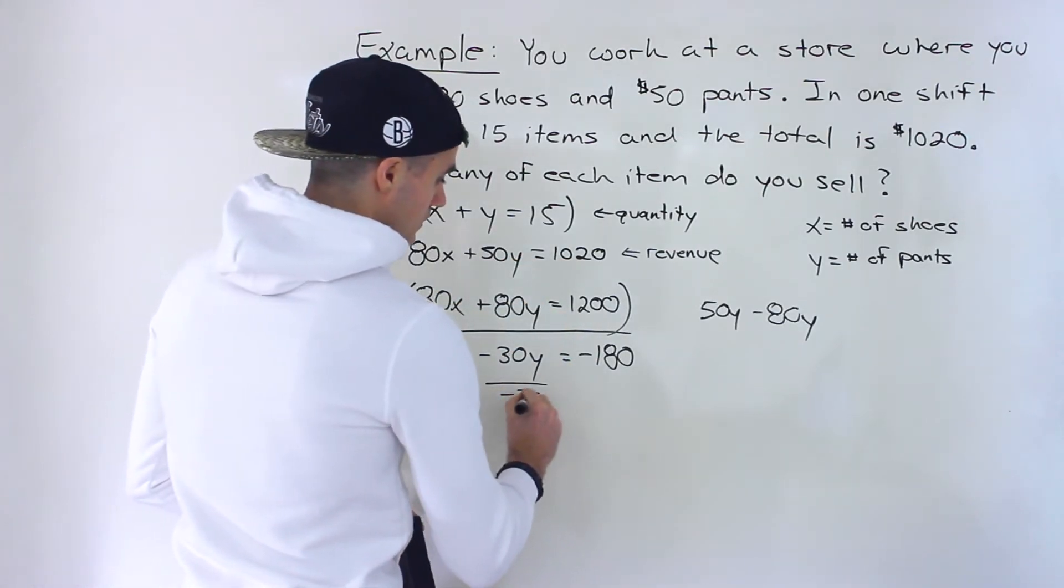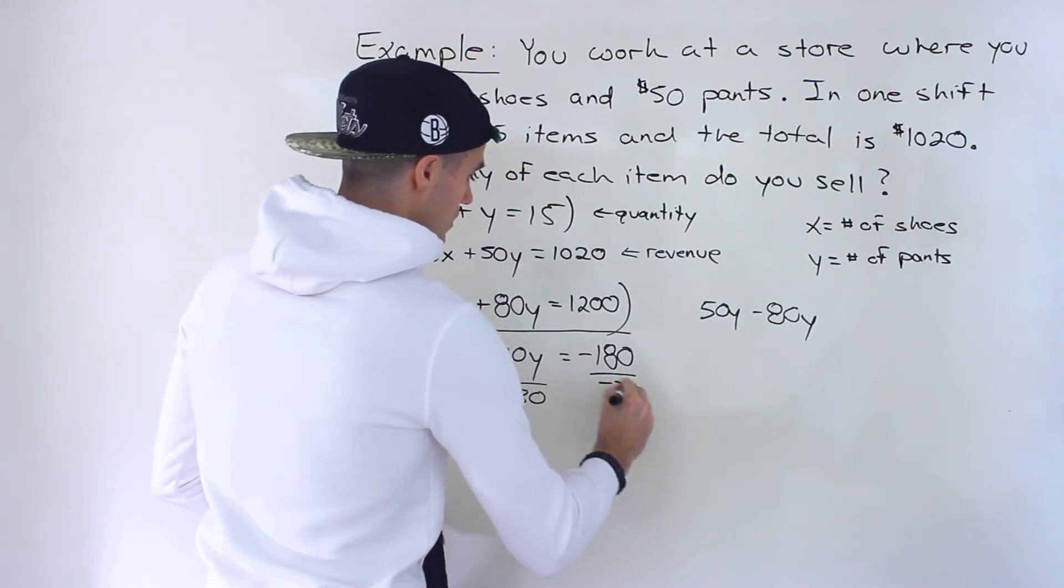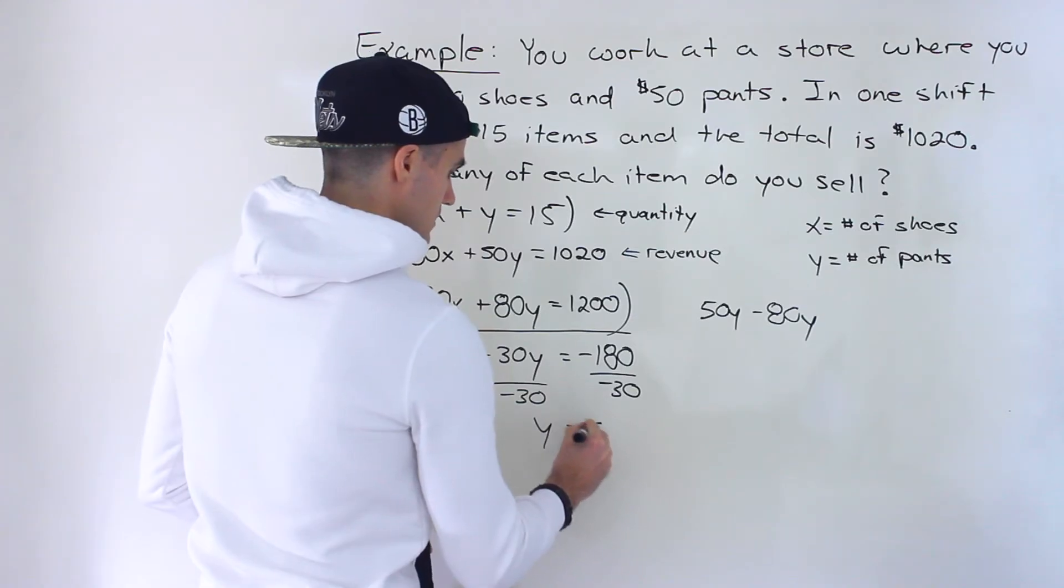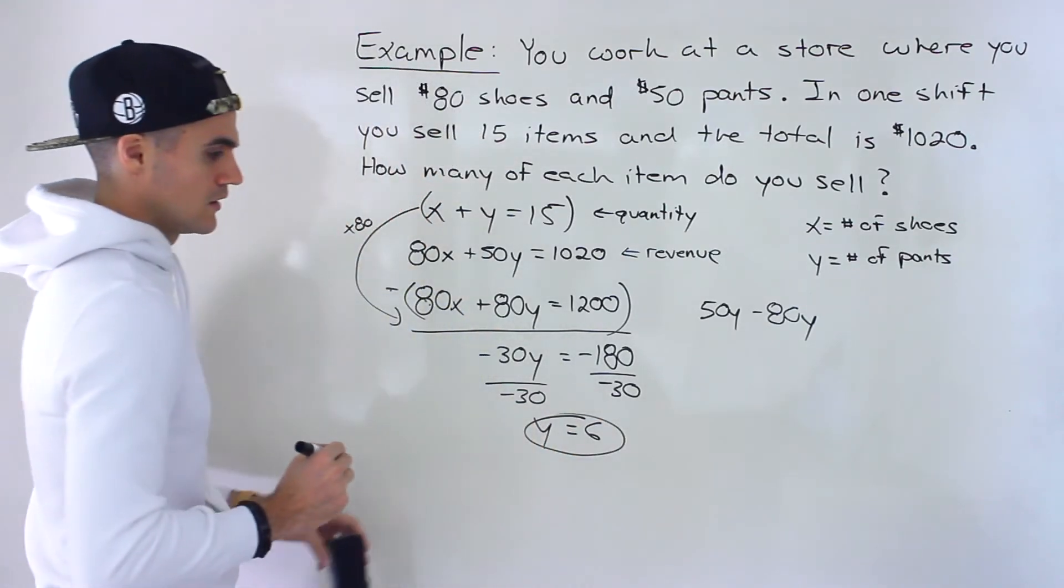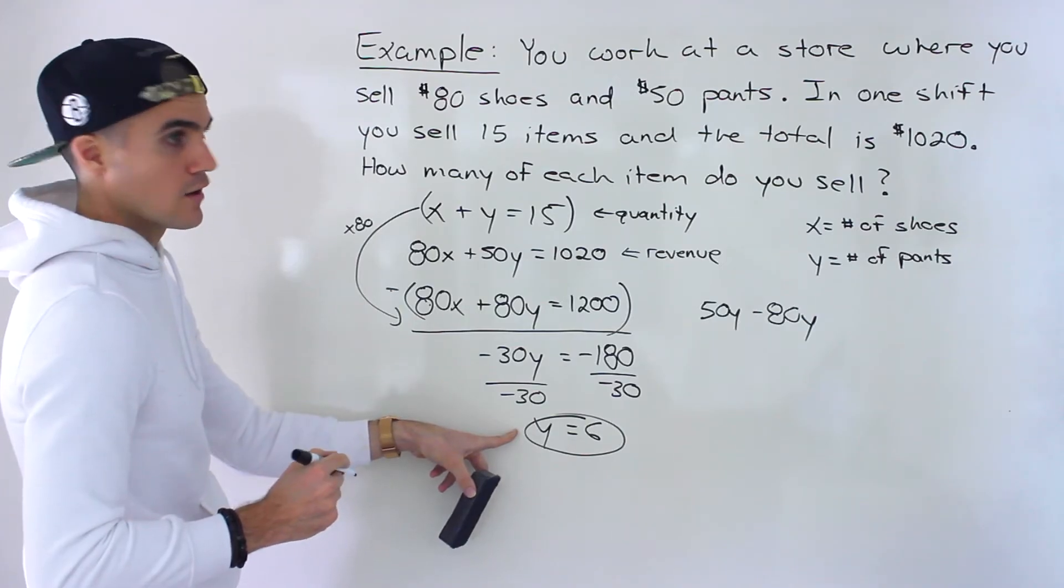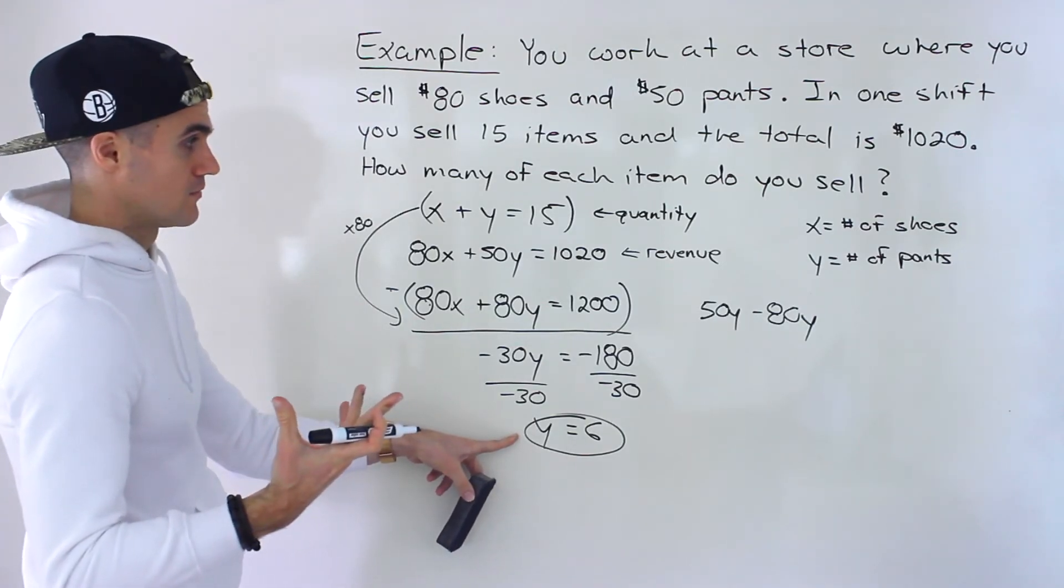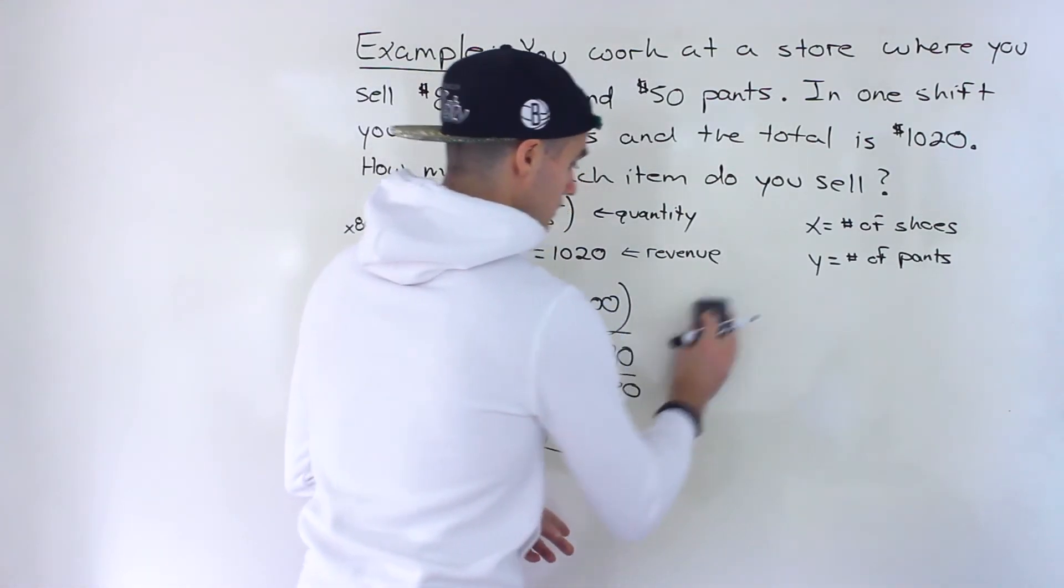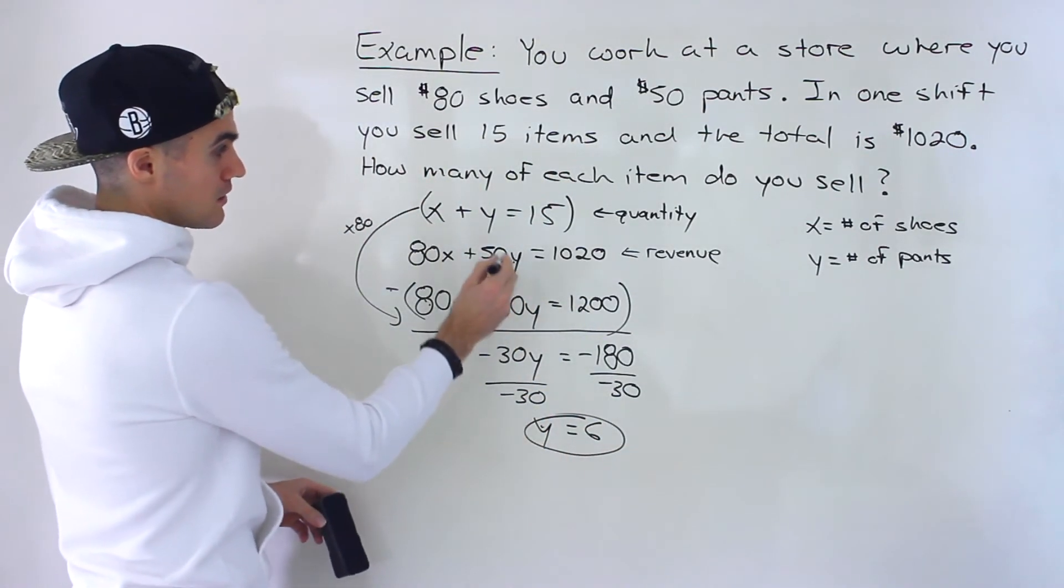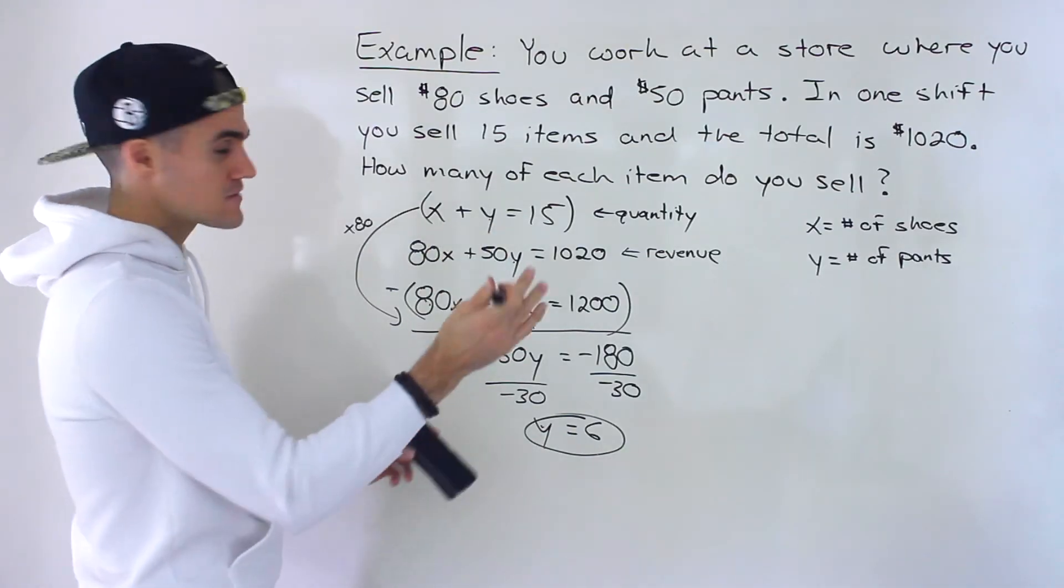So here, divide by negative 30, y would end up equaling 6. So right there, that's the number of pants that you sell. And then to solve for the number of shoes, to solve for the x value, you could take this and plug it in here or in here. You'll get the same x value. I feel like it's easier to work with this one.